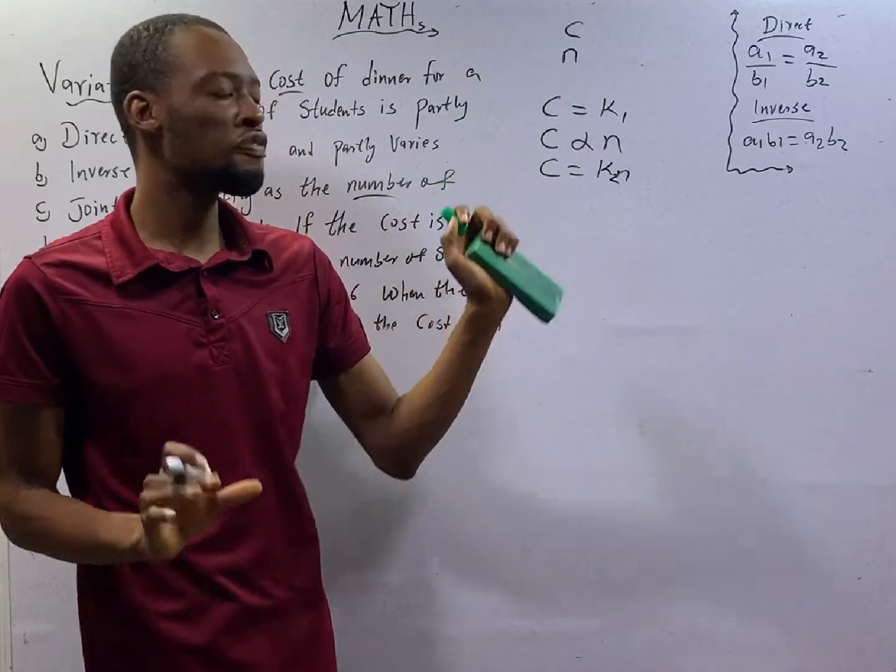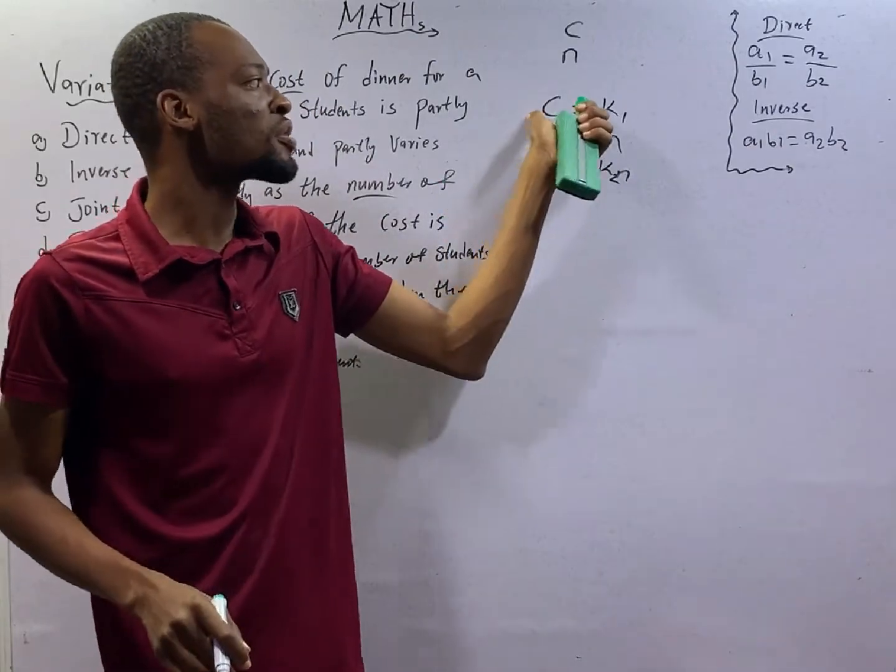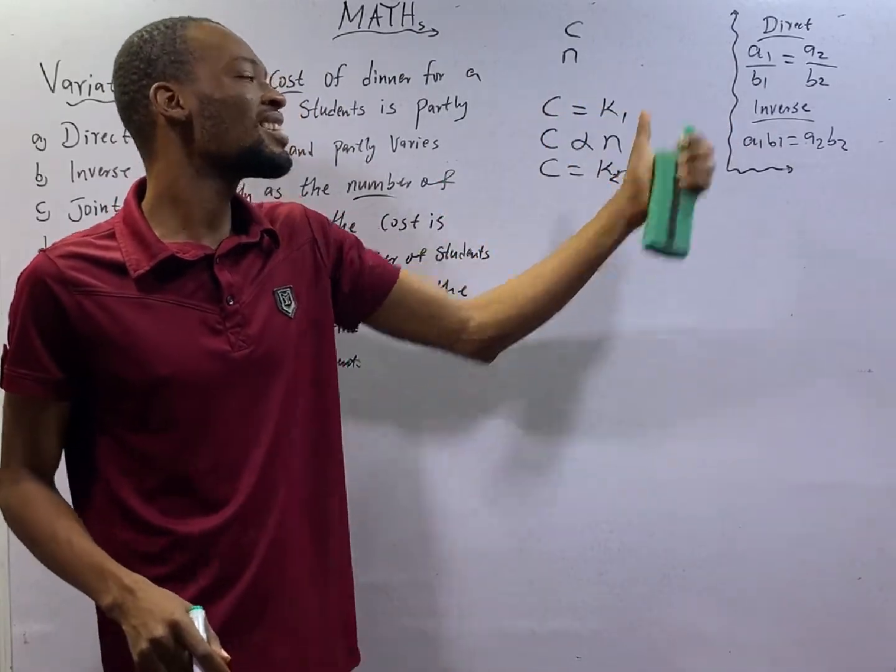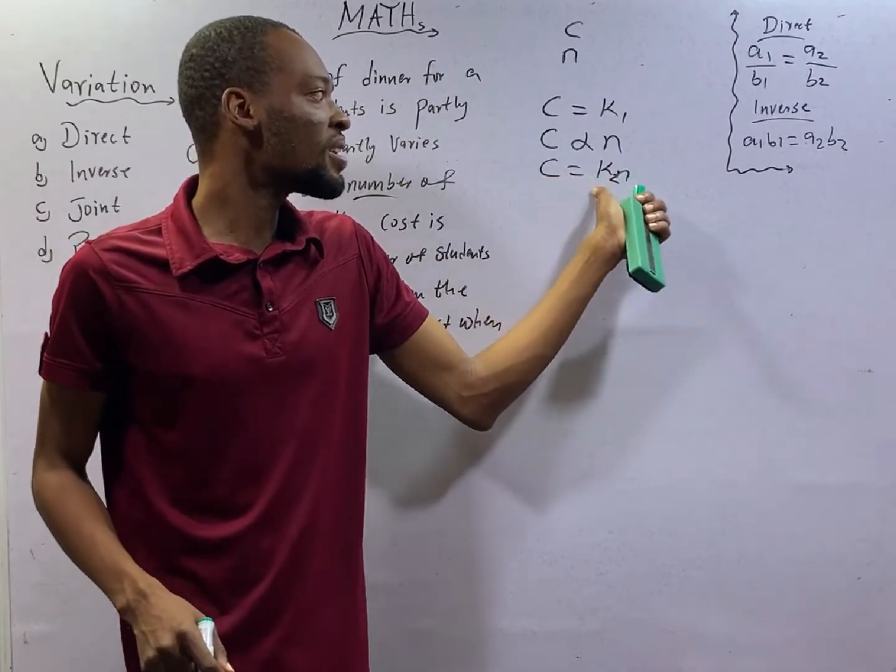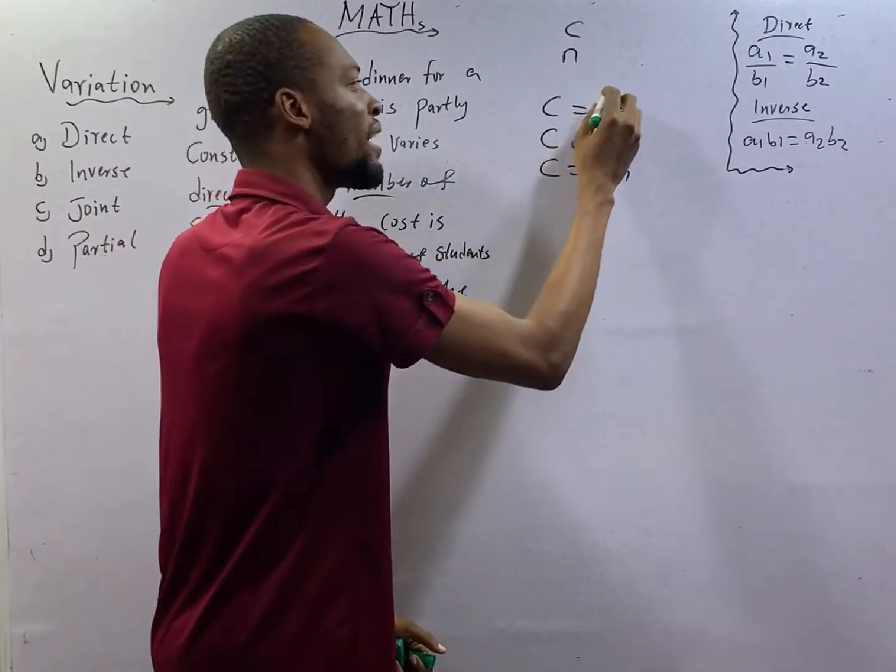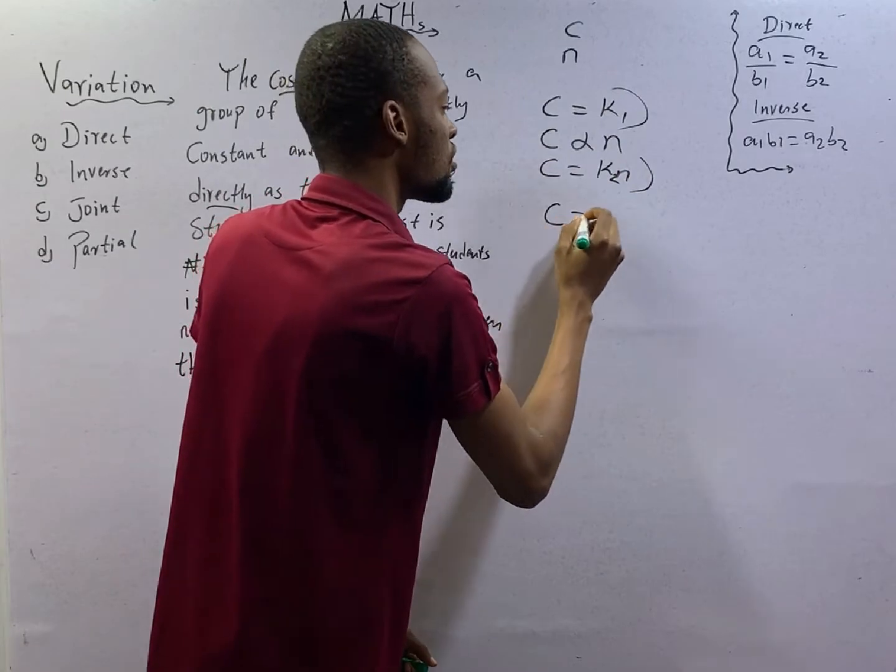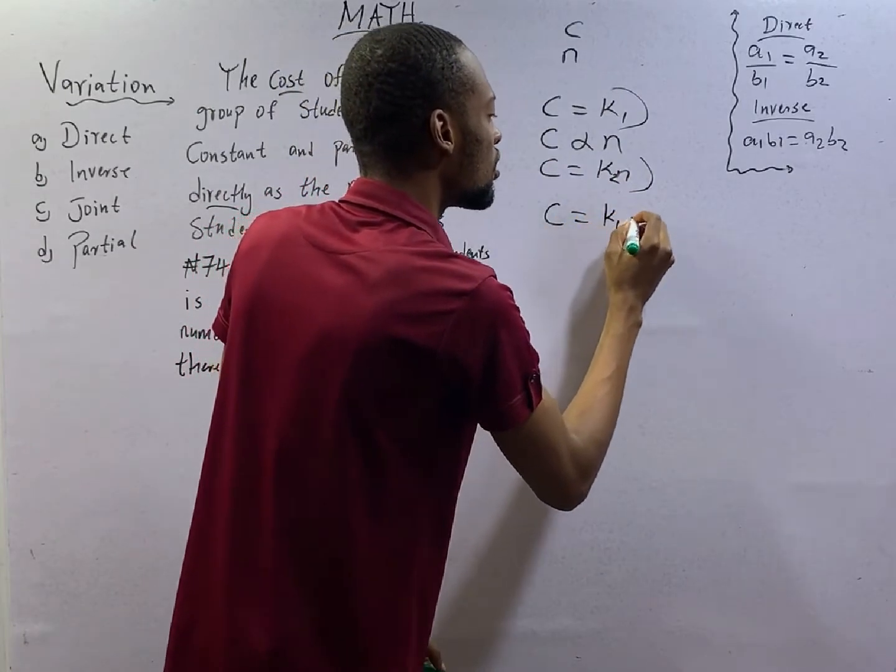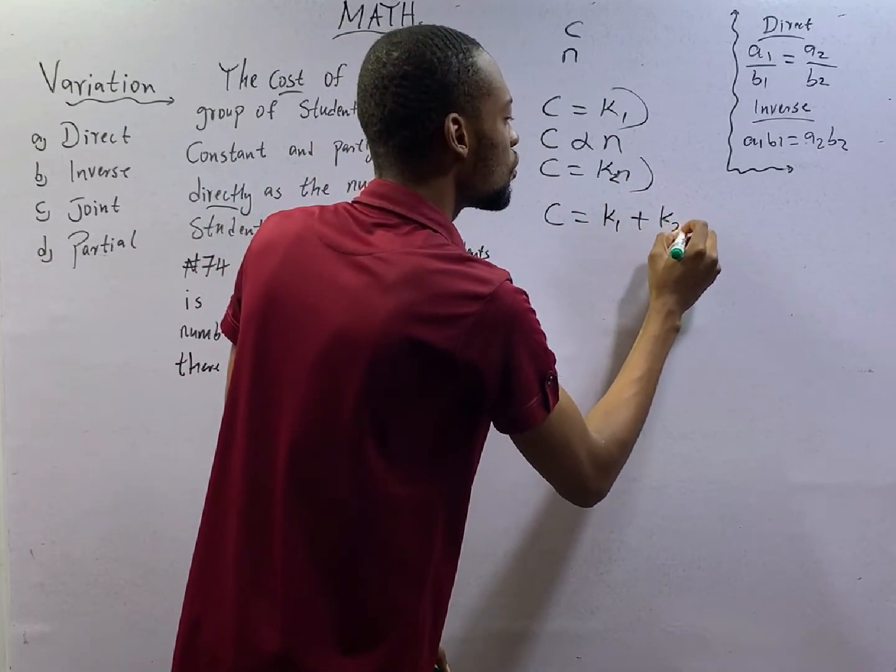With all these, we form an equation. It is cost that is partly constant, and it is the same cost that varies directly as the number of students. Combining here and here, you have C equals K1 plus K2N. This is the equation.